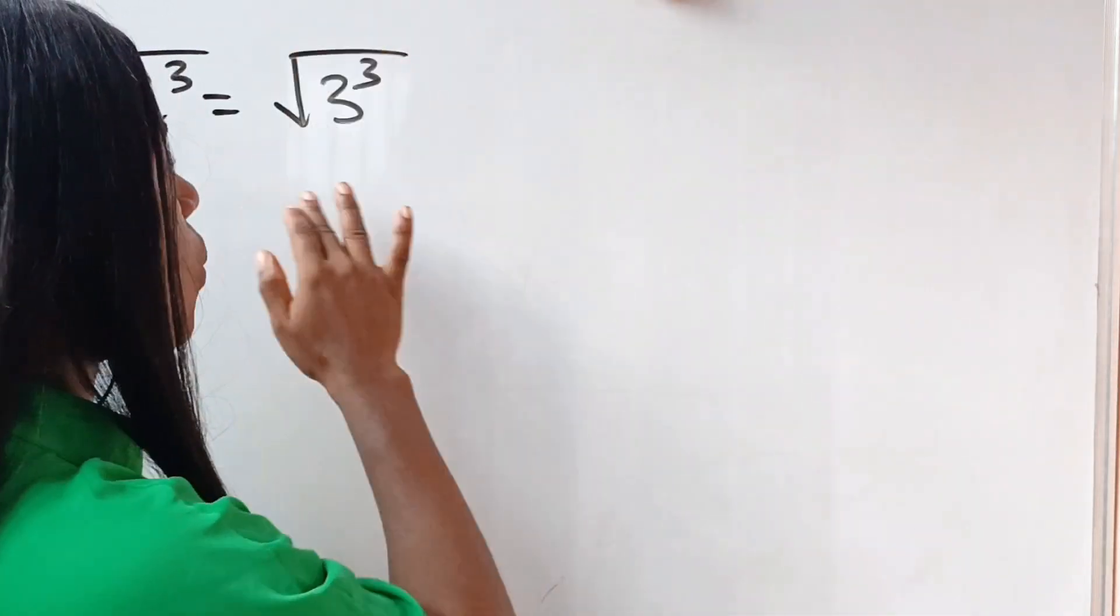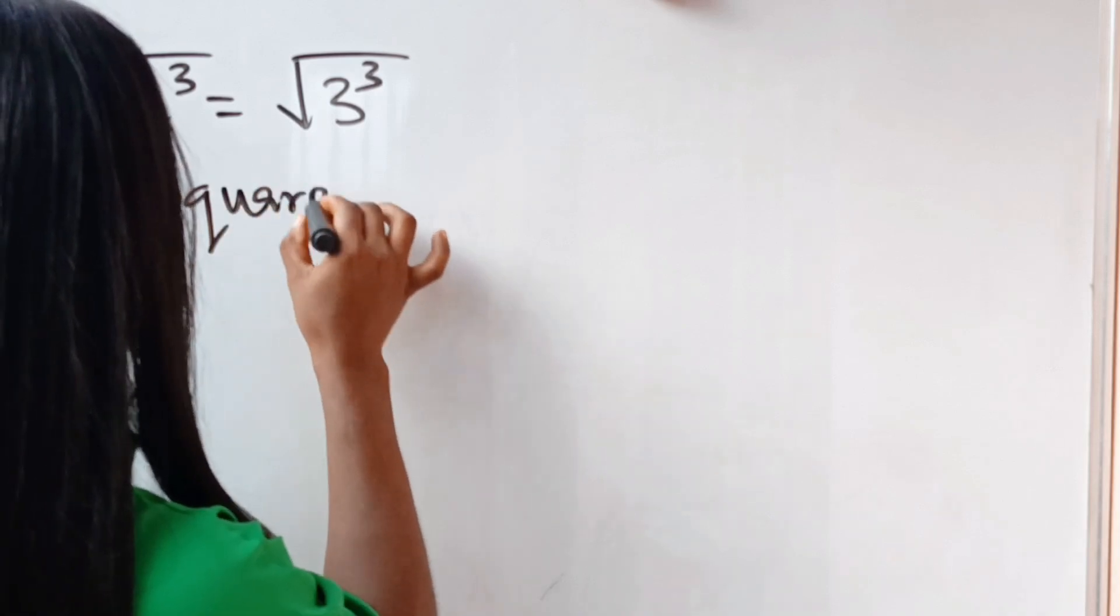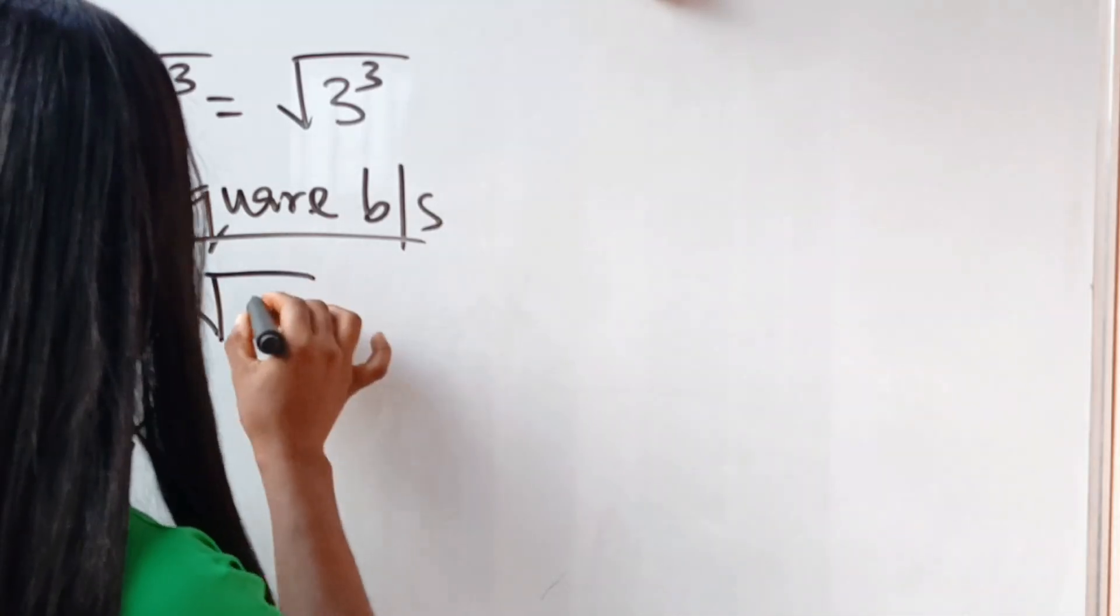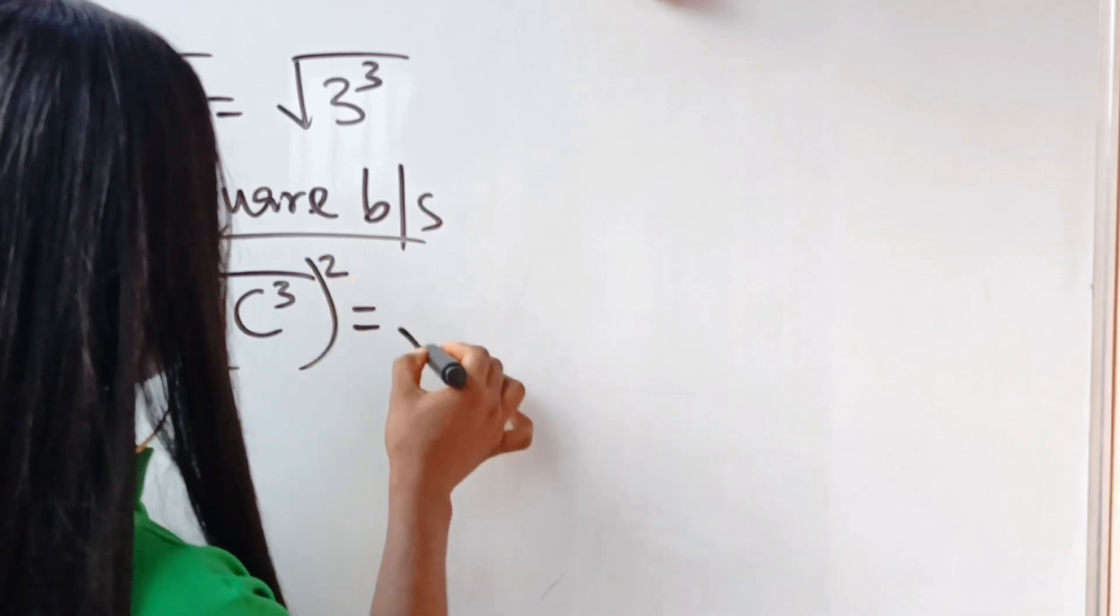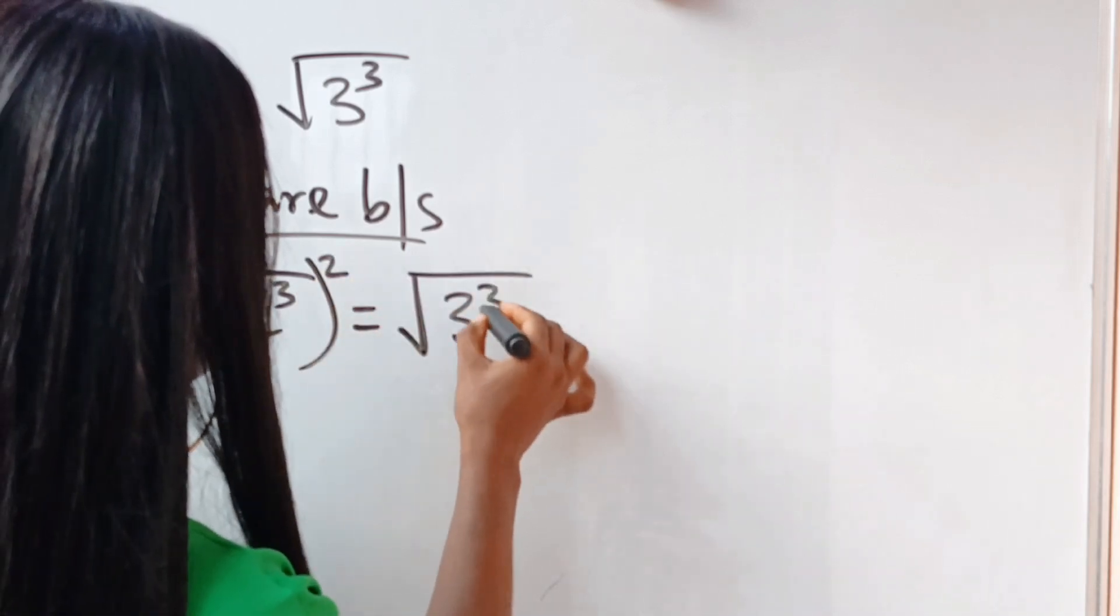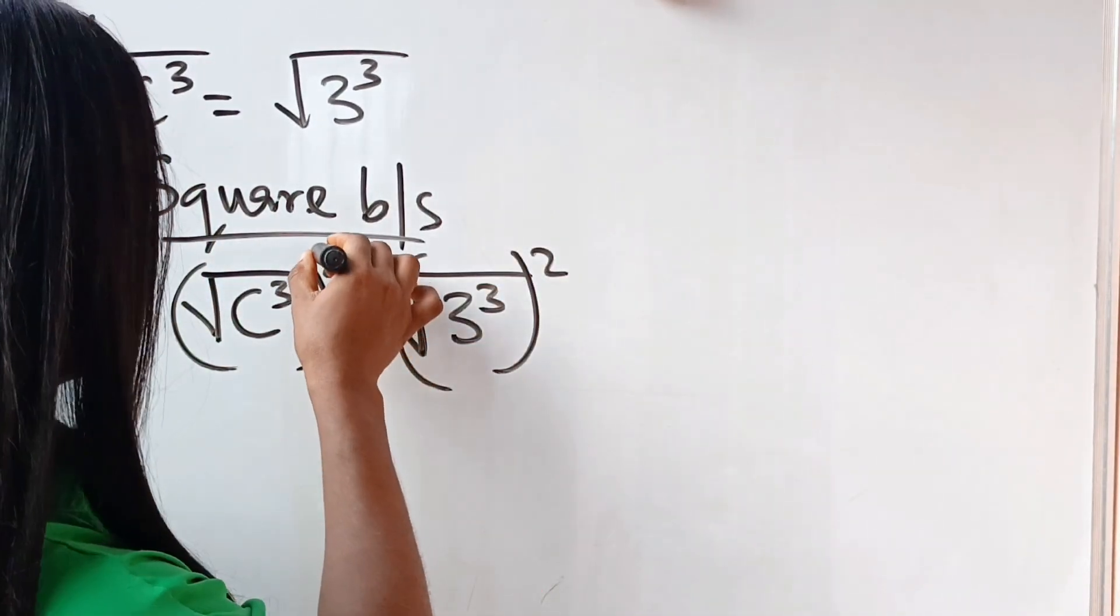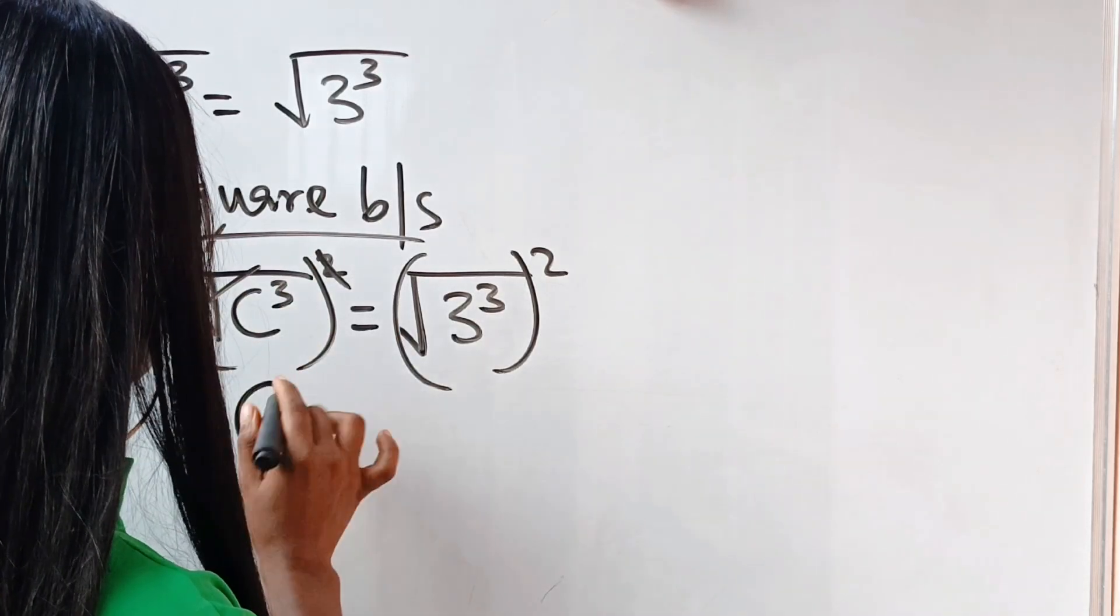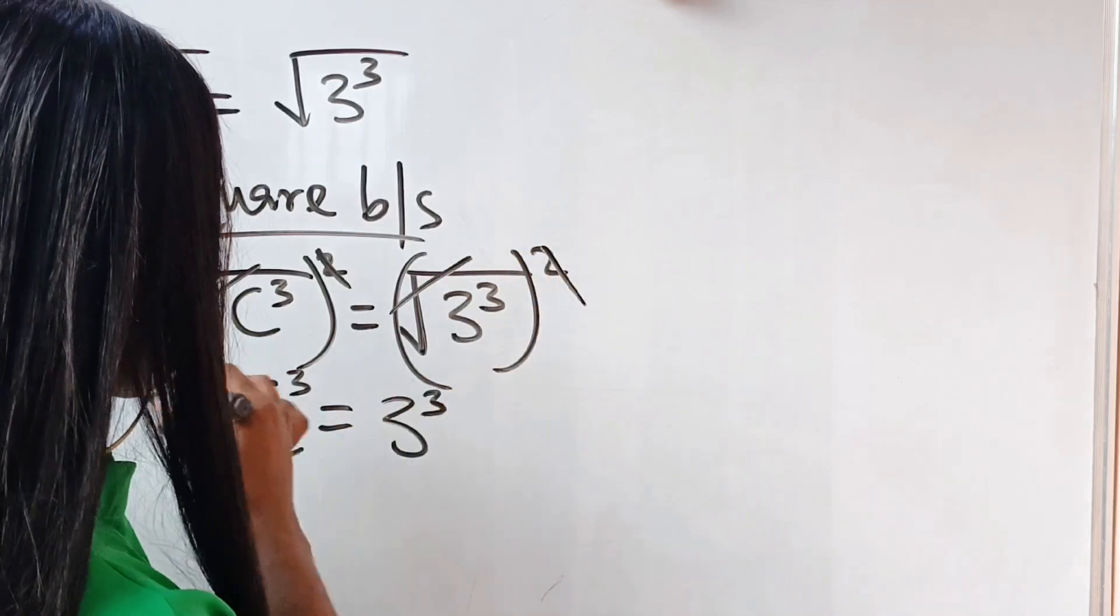So that means I'm going to square both sides of this equation. Now we are going to have square root of c to the power of 3, all squared, is equal to square root of 3 to the power of 3, all squared. Now having done that, notice that this square will remove the square root. So we now have c to the power of 3 is equal to 3 to the power of 3.